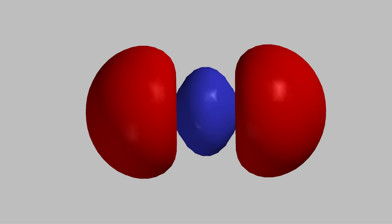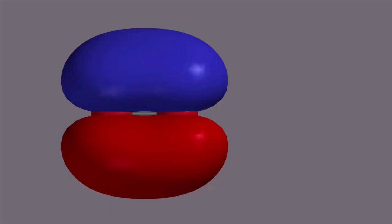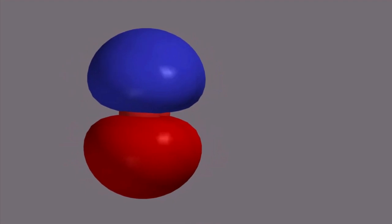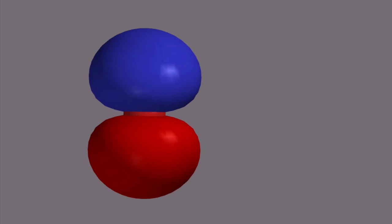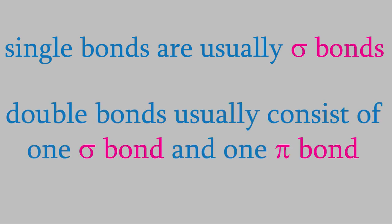But the other bond in the double bond comes from two p orbitals pointing in the x direction. The two halves of each orbital are called lobes, and the lobes of one orbital overlap with the lobes of the other. If you were to look at this bond from along the z-axis, you'd see that the bond isn't circular. Instead, one lobe is above the center of the bond, and the other is below the center. Instead of a sigma bond, this is called a pi bond. So every single bond is a sigma bond, and every double bond is one sigma bond and one pi bond.